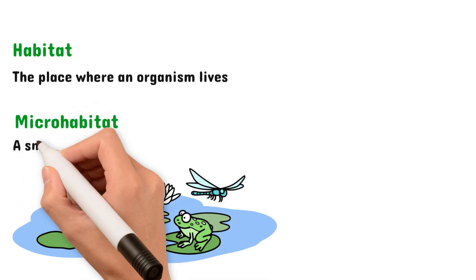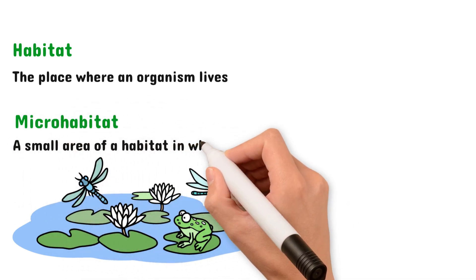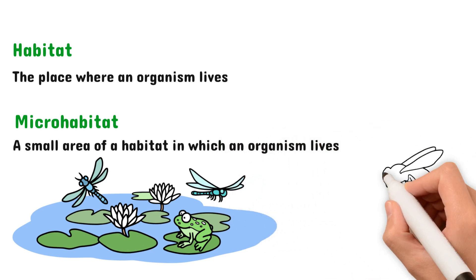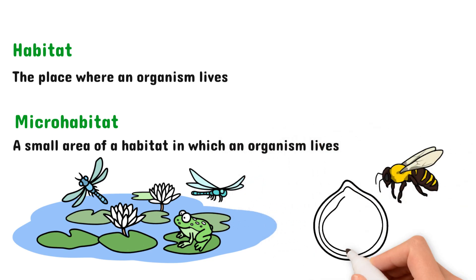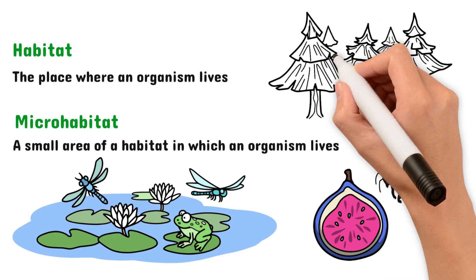Then there's also something called a micro-habitat. This is a small area of a habitat in which an organism lives. So let's take a fig wasp, for example. They live on a single fig on a tree, so that would be a micro-habitat.